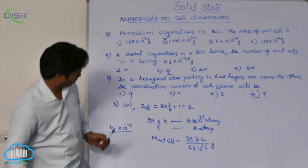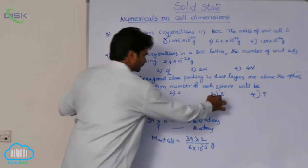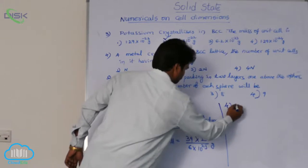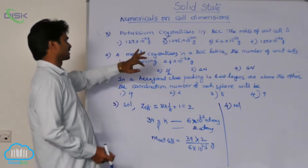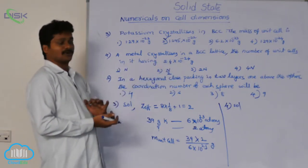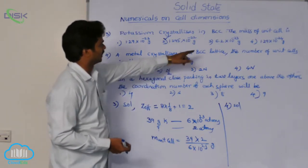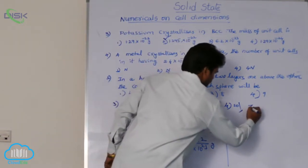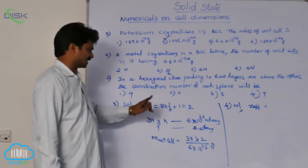That is the solution for the third question. Now see the solution for the fourth question. A metal crystallizes in a BCC lattice — finding the number of unit cells having a given mass. Here also, Z_eff for BCC is 2, meaning there are 2 effective atoms per unit cell.